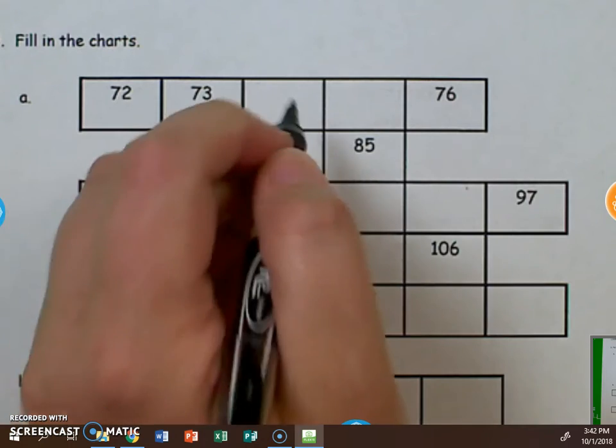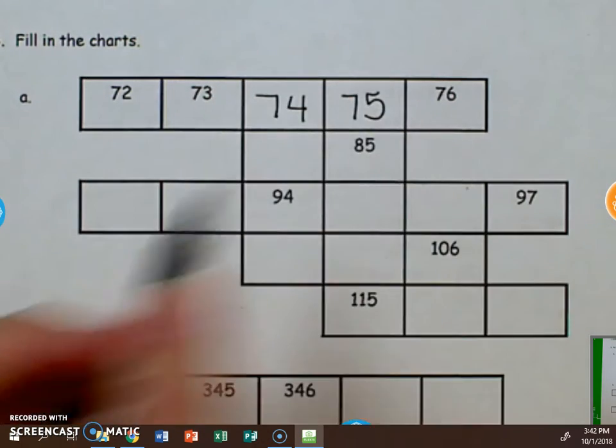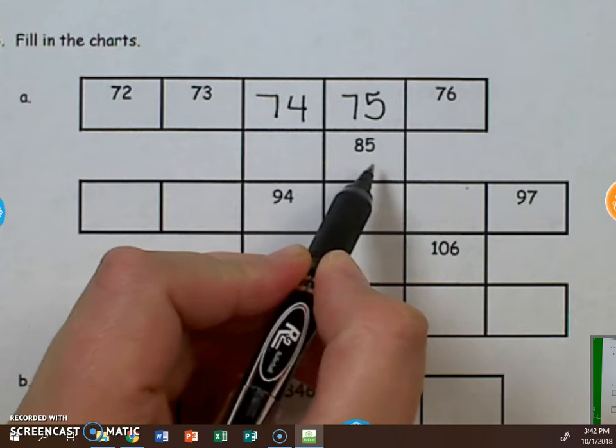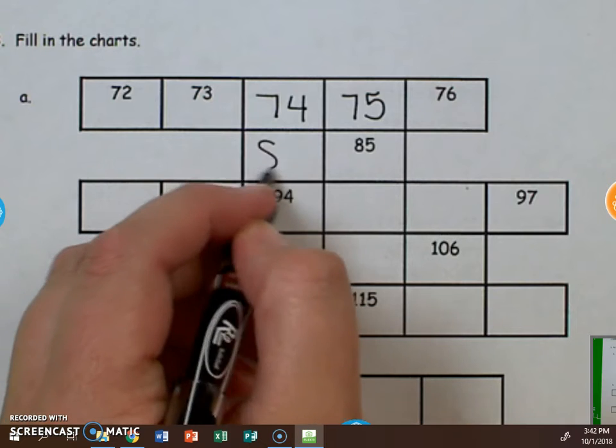72, 73, 74, 75, 76. In this row, 85. What number comes right before 85? 84.